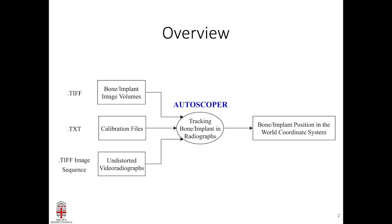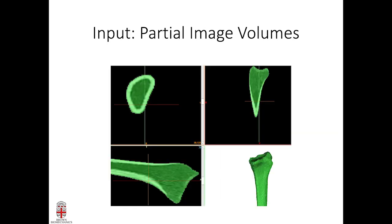The output is the bone or implant position and orientation in space. One input is a partial CT volume — here you see the model of the radius. We need the density-based information of the radius; the edges appear because bone density is higher, giving higher intensity, while the inside has less value. Autoscoper uses a ray casting approach to create the digital reconstructed radiograph of the bones.